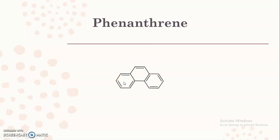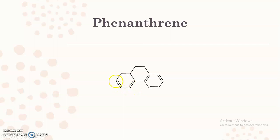In phenanthrene, when carrying out the numbering, for example starting with the first ring: carbon 1, 2, 3, 4. From this ring we shift to the third ring: 5, 6, 7, 8, and the two bridgehead positions are known as 9 and 10. So, in the same way as anthracene, we carry out the numbering of phenanthrene.